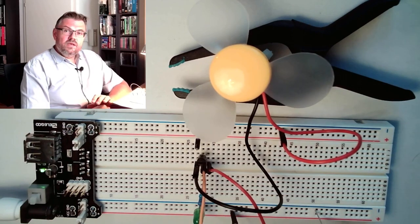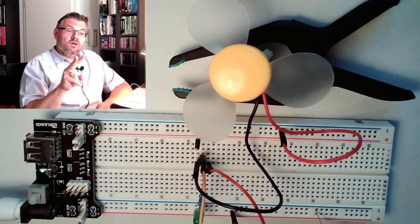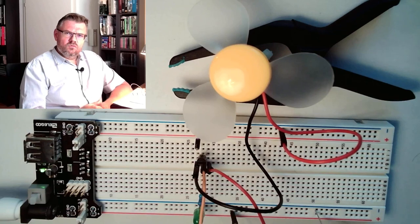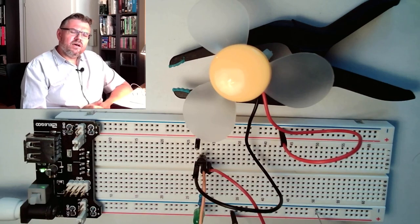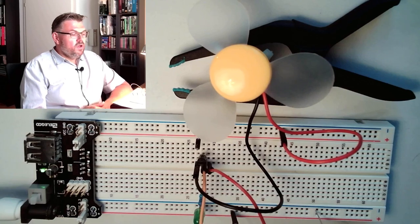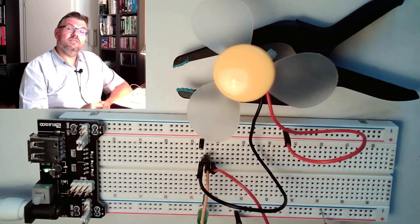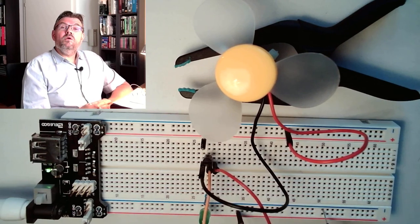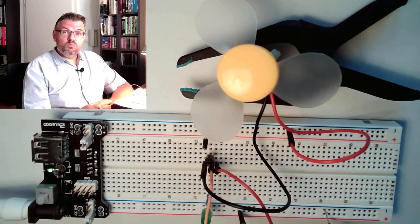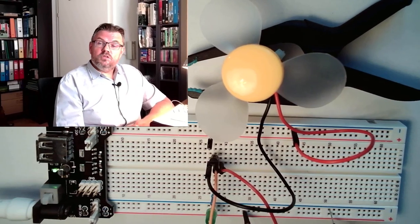So what we need is that we change the polarity and the voltage level. The voltage level we can do with PWM, pulse width modulation. And the direction, well, with this one transistor, this is not enough. We will need a so-called H-bridge. And I'm going to explain you what an H-bridge is.